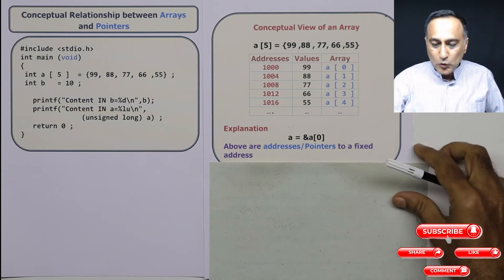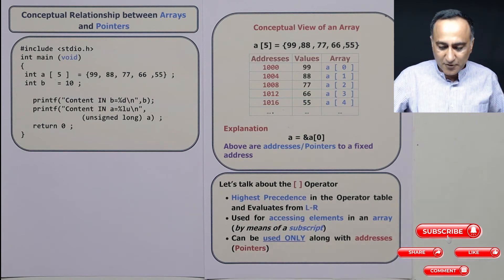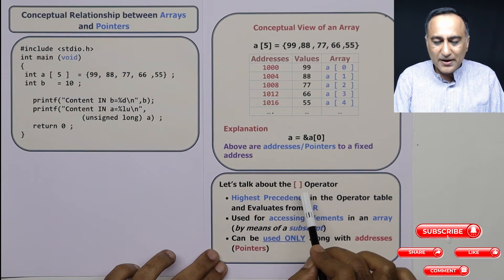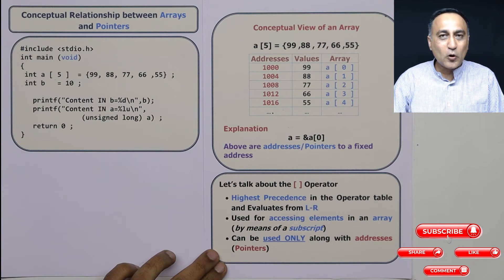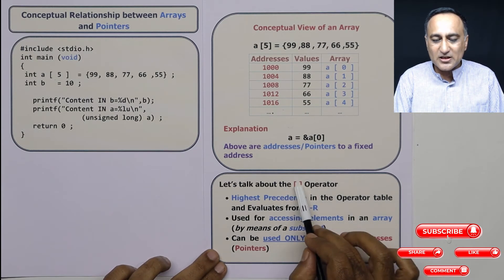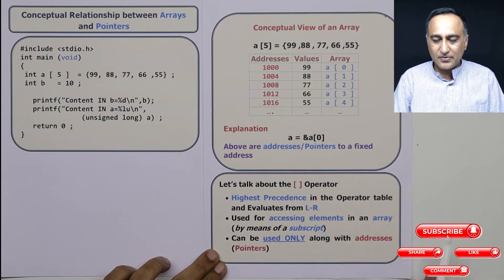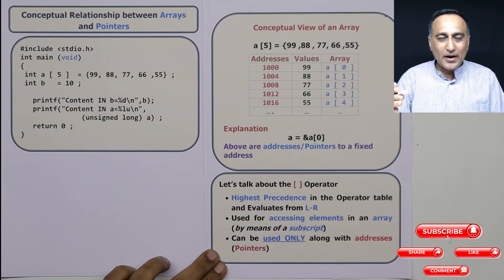Now, in order to enhance your understanding, we will take it a step further. Now, all of you have looked at this square bracket operator. It has got the highest precedence or the priority in the operator table. The first thing which may surprise you is this fellow is an operator. He is not some symbol. He is a normal operator.